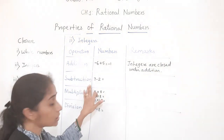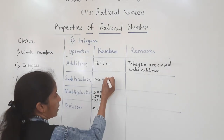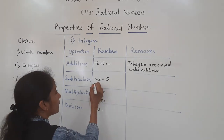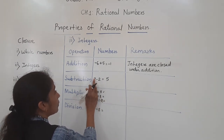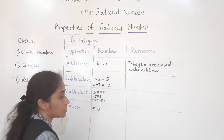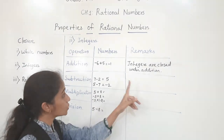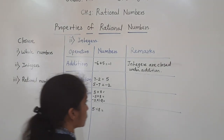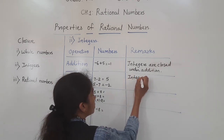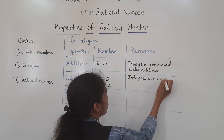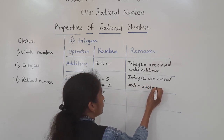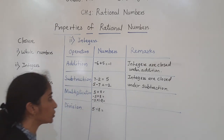Now subtraction. Seven minus two equals five — is five an integer? Yes. If we take 5 minus 7, the answer is minus two — is that an integer? Yes. So this works in subtraction. Integers are closed under subtraction.